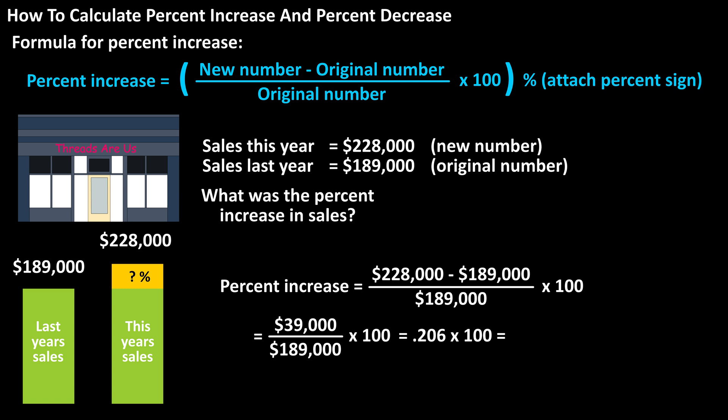Next, we multiply 0.206 times 100, which gives us 20.6. Then we attach a percent sign to get a final answer of 20.6% as the percent increase in sales.